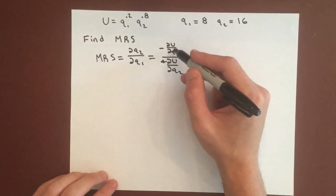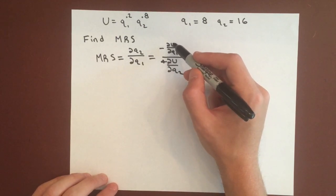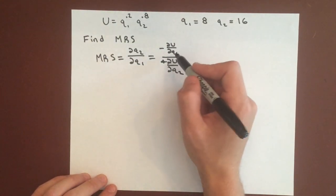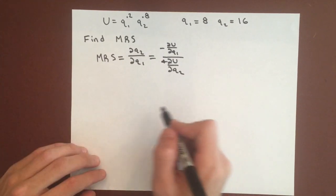So in this case, it's going to be easier to find the marginal utilities of good 1 and good 2, and use them to evaluate marginal rate of substitution.